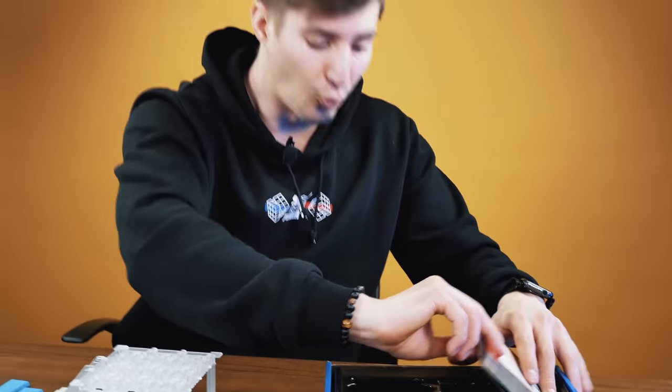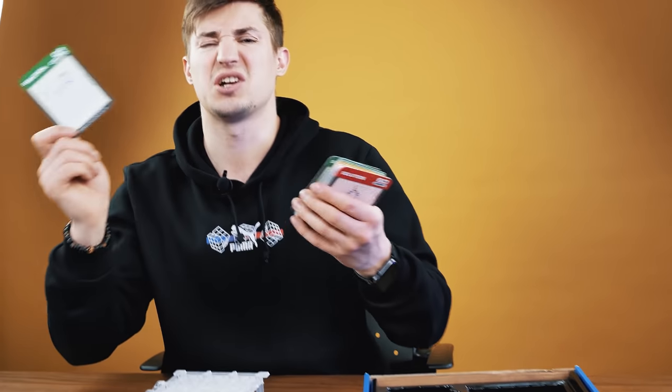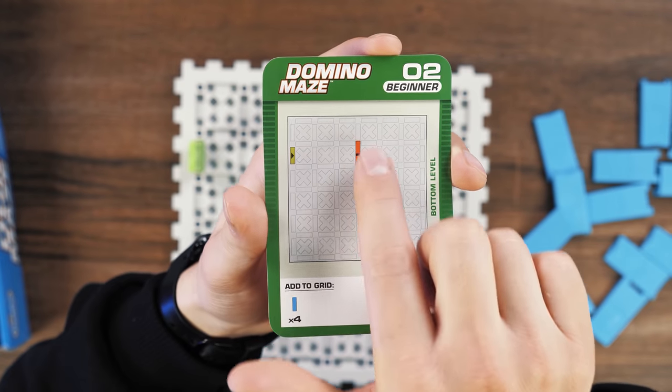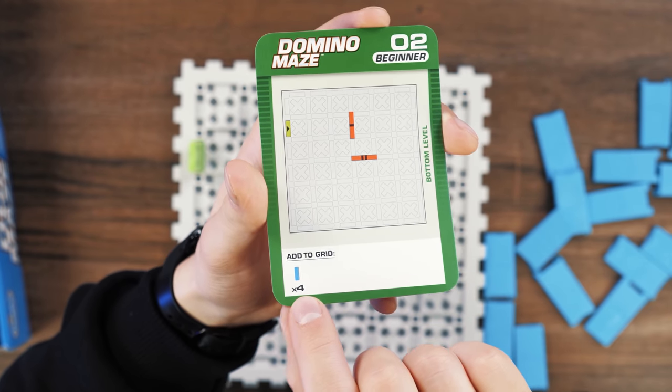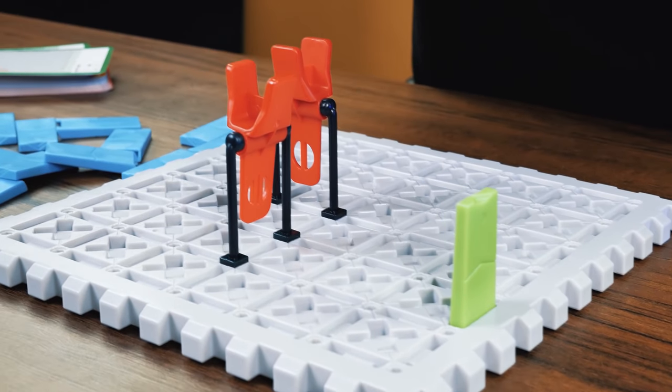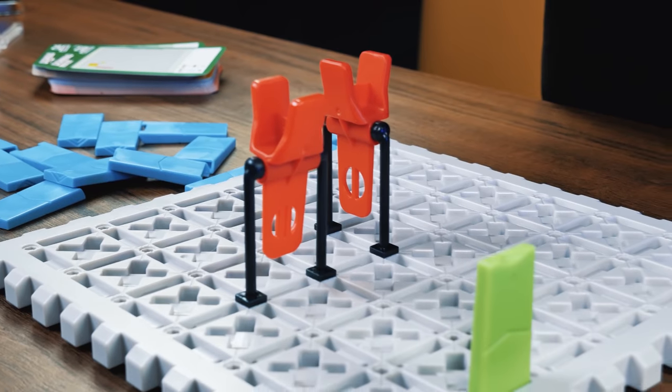I suggest not to waste our time and start right away. Let's take some easy first level to begin with. No, the first one is too easy, let's take the second one. There's a card with the indicated elements that should already be present here and the elements that we need to use. In this case, there's a green domino on the field as the starting one and two red flags that we need to raise.